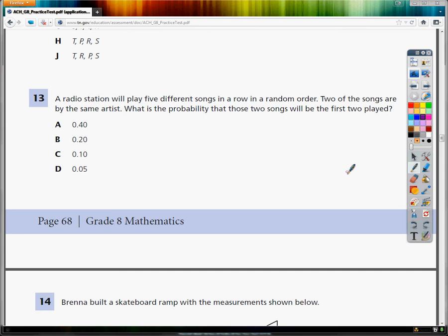Now, this is a probability question. Anytime you see probability, which this one has written right here in the problem, you should pay close attention. Two things come to my mind: the first is that finding the total is very important. I need to know how many total songs are there. Well, it says there's five different songs, so I know the total is five.